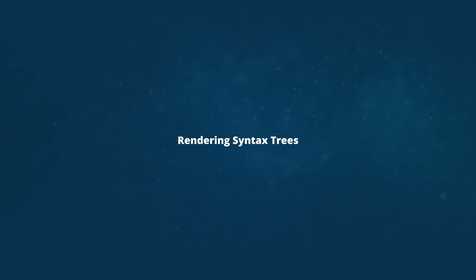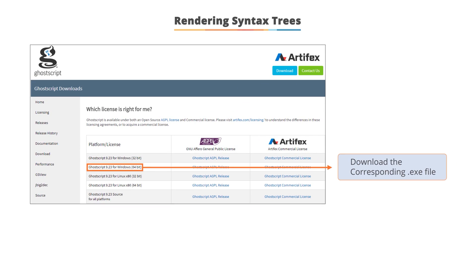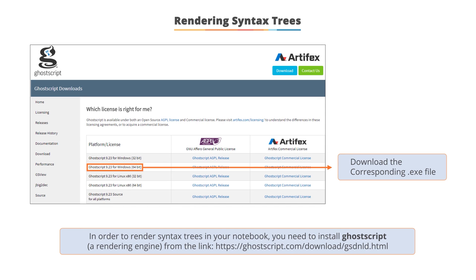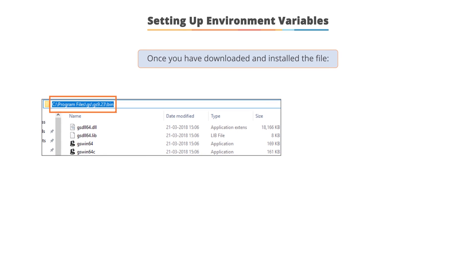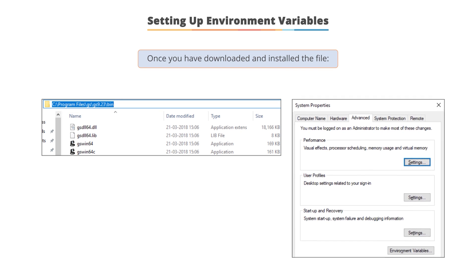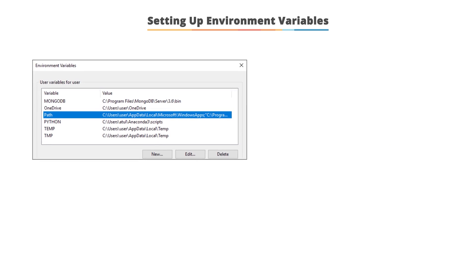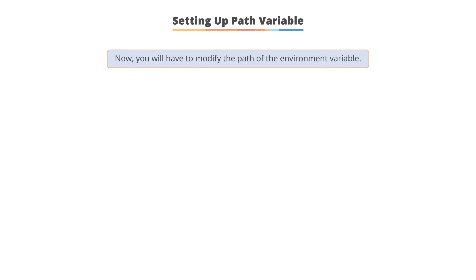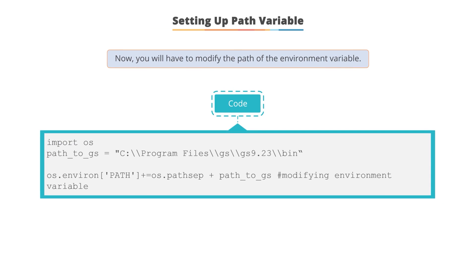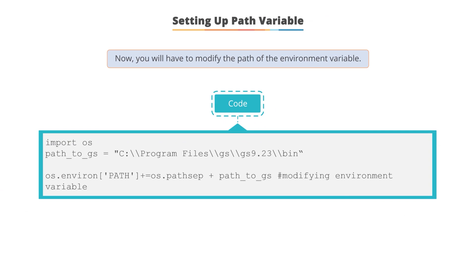To render syntax trees in your notebook, download the corresponding .exe file to install the GhostScript rendering engine based on your system configuration. Once downloaded and installed, copy the path of the installed folder. Go to System Properties, under Advanced Properties find the Environment Variable button. Open the bin folder, add its path to your environment variables, then modify the path of the environment variable. Use the given code to test the working of the syntax tree after setup.